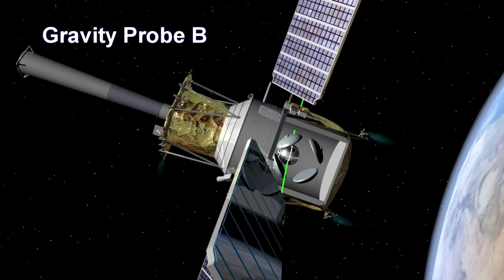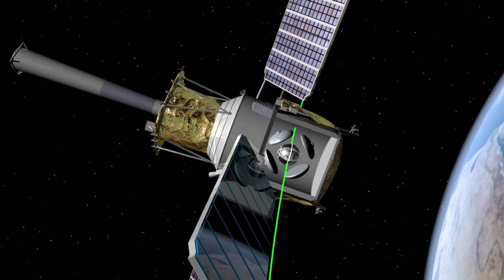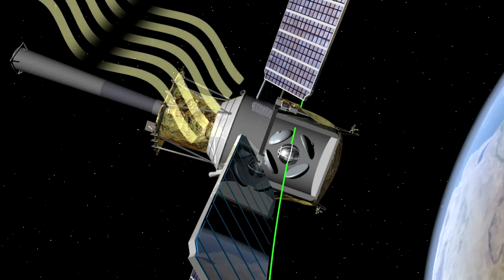To test this effect, NASA developed a satellite called Gravity Probe B and put it into orbit 264 kilometers above the Earth in 2004, where it operated for a year.